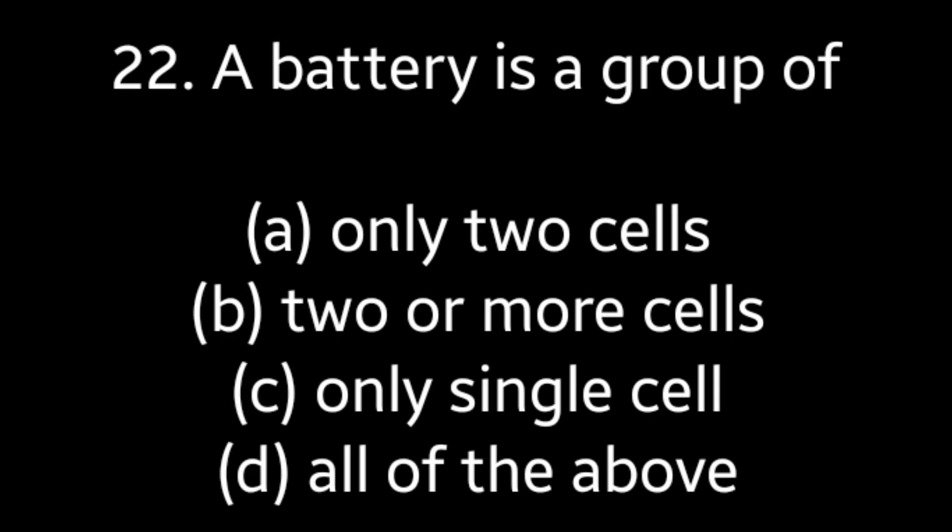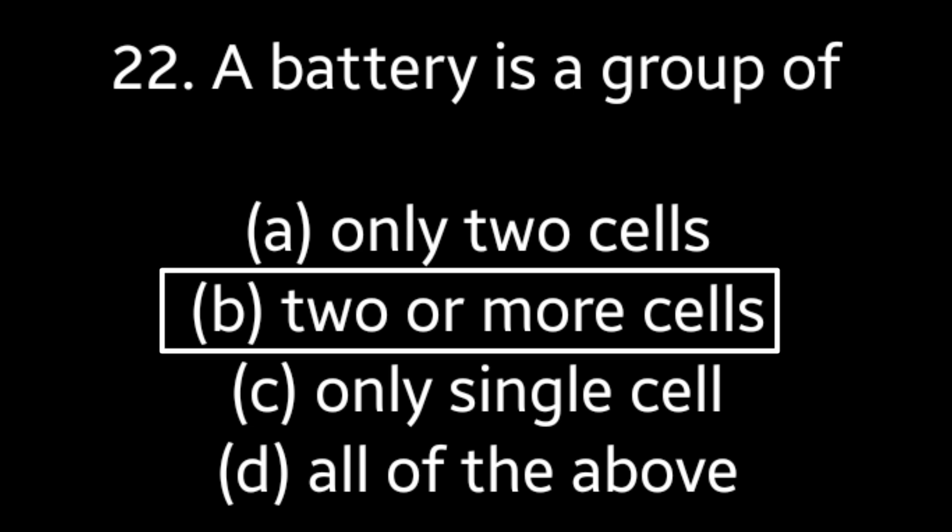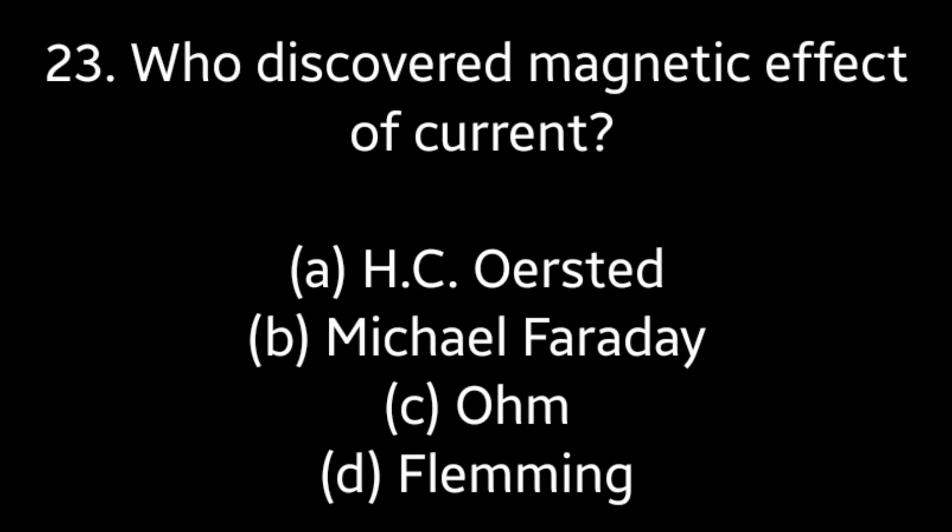Question No. 22: A battery is a group of — Only two cells, Two or more cells, Only single cell, All of the above. Answer is Option B: Two or more cells.